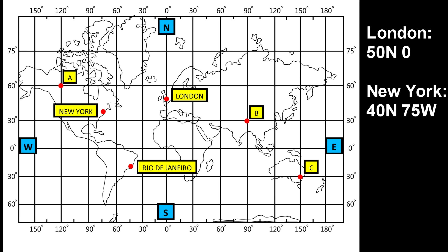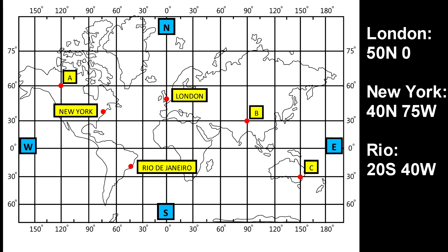Lastly, let's look at Rio de Janeiro. Rio is to the south of the equator and to the west of the prime meridian. So Rio would be located around 20 degrees south, 40 degrees west.